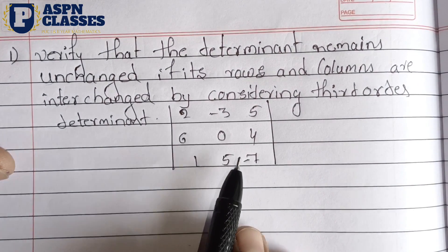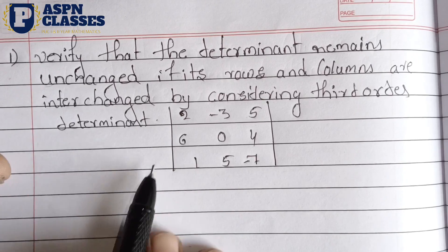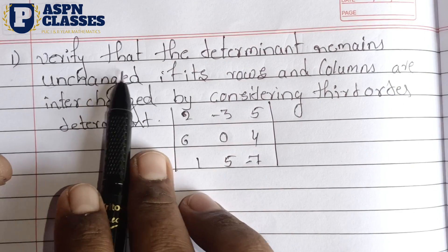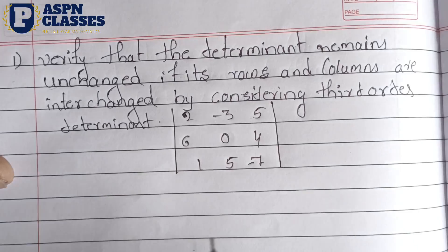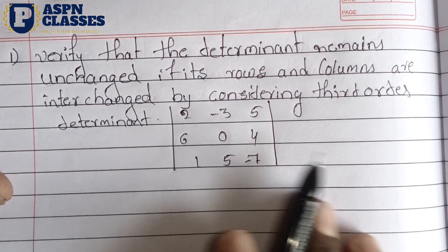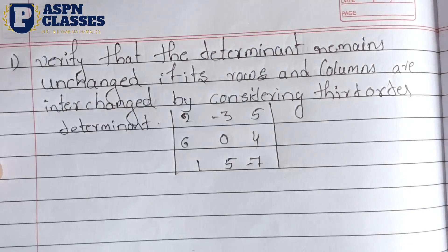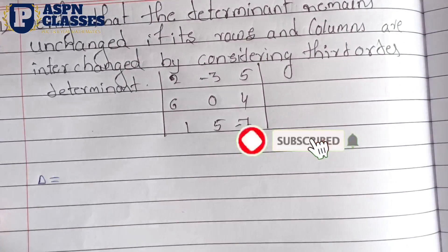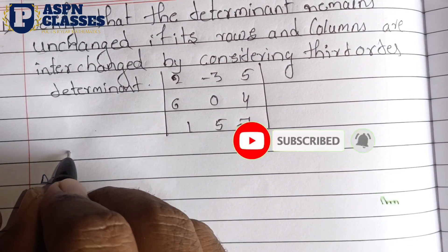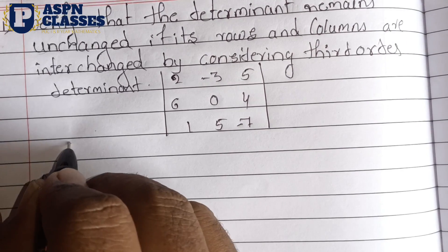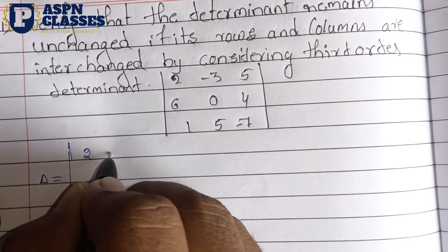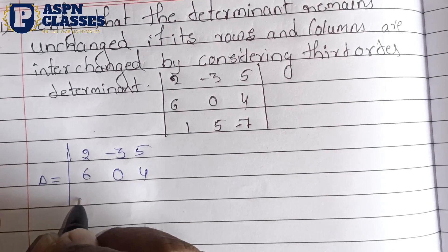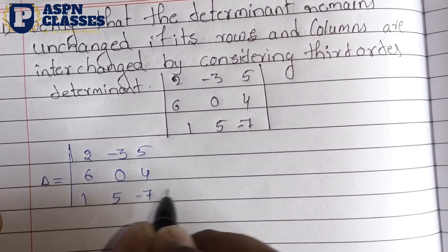It is a 3 by 3 order determinant. We have to solve this statement — you have to interchange the row to column. Therefore, the determinant values are unchanged. We have to denote this determinant as delta.